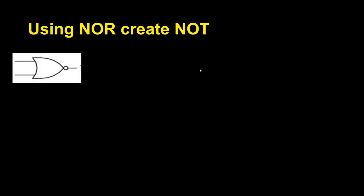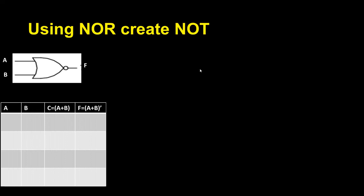Now using a NOR gate, how can I create the other basic gates? I want to create a NOT gate using a NOR gate. This is my NOR gate — I have two inputs and this is my output. I write the possible input combinations, then A plus B, and the final output: A plus B, entire bar.